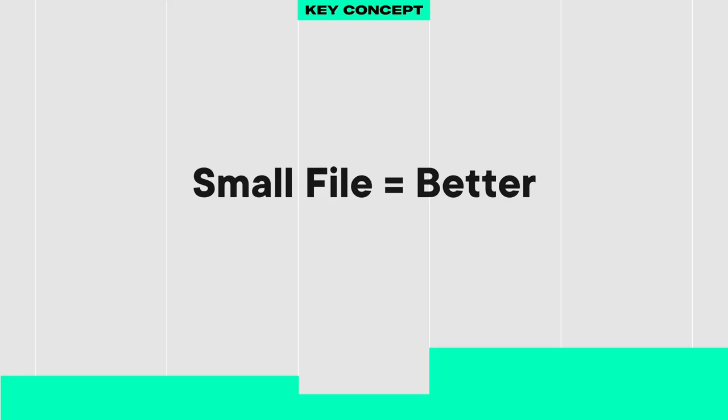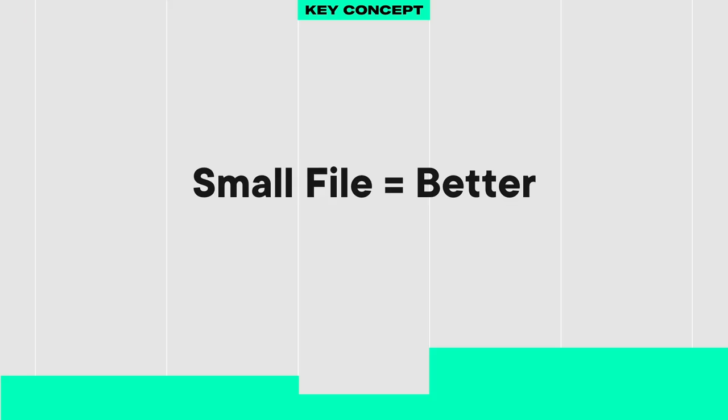How do we optimize images for the web? The first key concept is that smaller file sizes are better. People don't like waiting, and the faster the website loads the better. There's tons of research about it — websites that load slower actually lose sales.